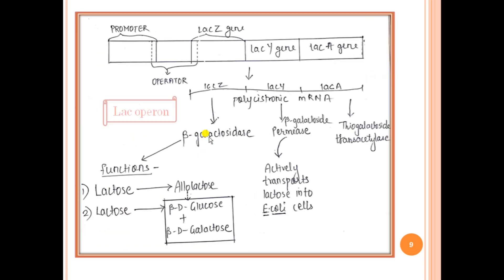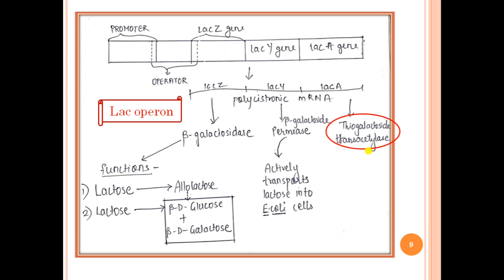The third gene, lac A, encodes for a protein called thiogalactoside transacetylase. As the name suggests, it transfers an acetyl group from acetyl-CoA to beta-galactosides. It mostly transfers the acetyl group to non-metabolizable beta-galactosides which enter the cell, bringing about detoxification of otherwise toxic non-metabolizable beta-galactosides into a non-toxic form. It does not have any role to play in the metabolism of lactose itself.